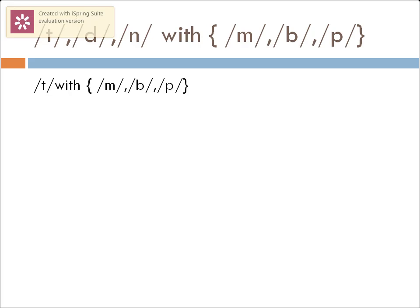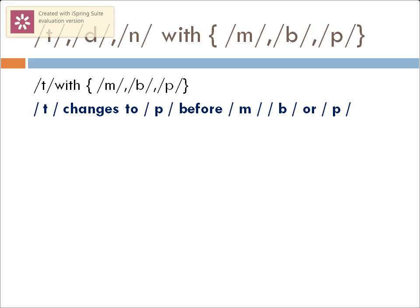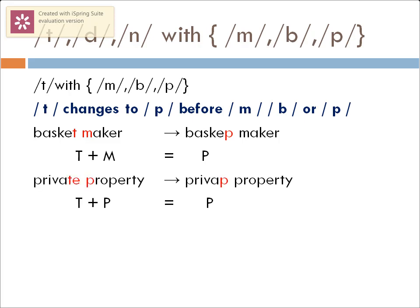Now we'll look at the other categories of assimilation. As a general case, the sounds /t/, /d/, and /n/ — whenever they come along with the sounds /m/, /b/, or /p/ — assimilate and give out different sounds. The sound /t/ changes to /p/ before /m/, /b/, or /p/. For example, 'basket maker' sounds like 'basketp maker,' 'private property' sounds like 'private broperty,' and 'front bench' sounds like 'from bench.'